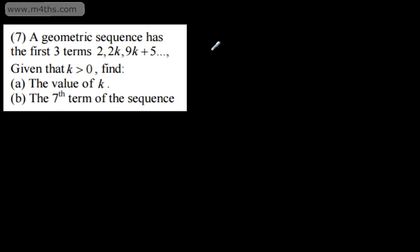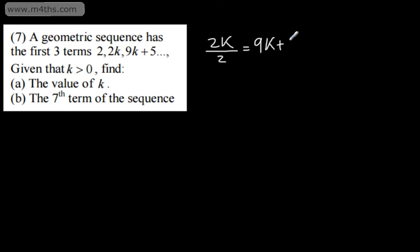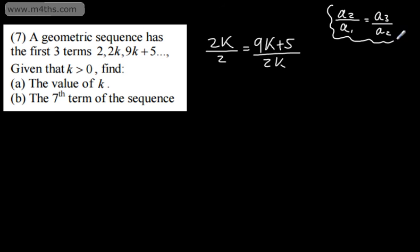Question 7. A geometric sequence has the first three terms 2, 2k, and 9k plus 5. Given that k is greater than 0, find a) the value of k, and b) the seventh term of the sequence. With a geometric sequence we have a common ratio — it's multiplied by a fixed amount. So 2k divided by 2 will be the same as 9k plus 5 divided by 2k. In general, a sub 2 divided by a sub 1 equals a sub 3 divided by a sub 2.